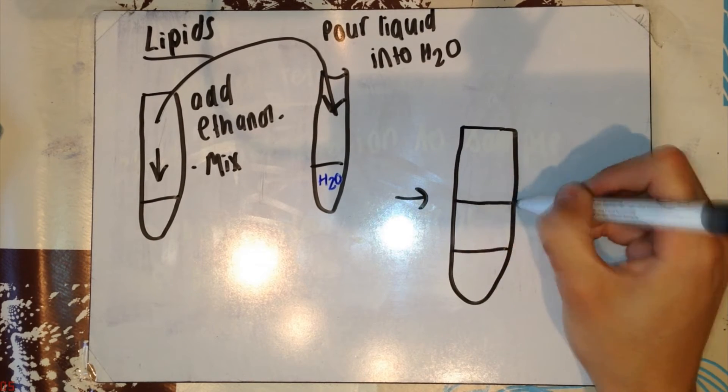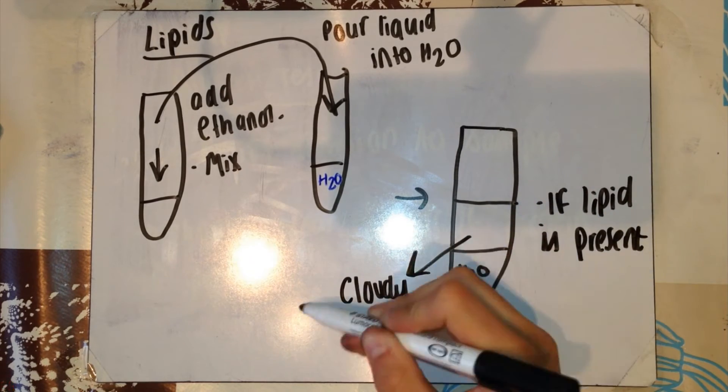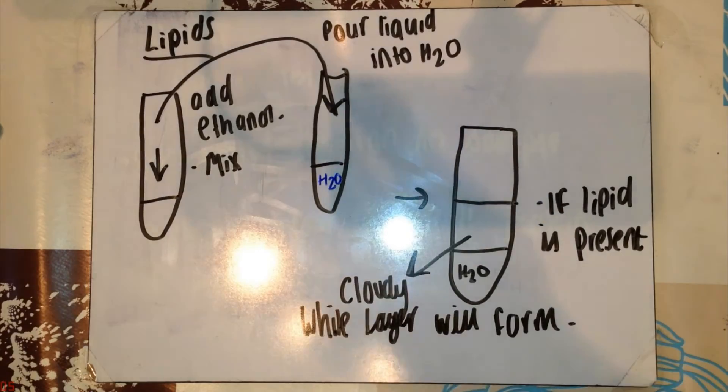Now, after mixing, if lipids are present, you should have H2O on the bottom and the layer of cloudy white emulsion on top. This proves lipids are present in your original solution.